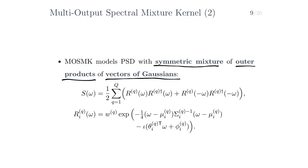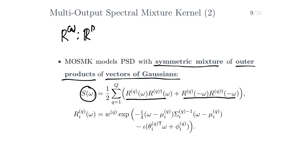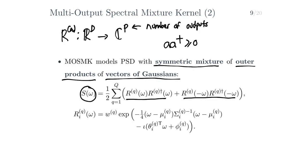The multi-output spectral mixture kernel models the power spectral density with a symmetric mixture of outer products of vectors of Gaussians. It models the PSD — now a p by p complex matrix-valued function — with a sum of q components, where every component is a symmetric sum of outer products of a vector-valued function rq. Recall that if we have a complex vector a and multiply it by its conjugate transpose, the result is always positive definite. Therefore, this construction yields a positive definite PSD, and symmetry is also clearly satisfied.